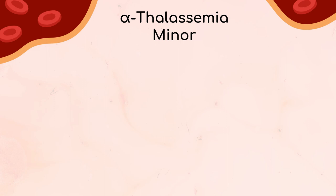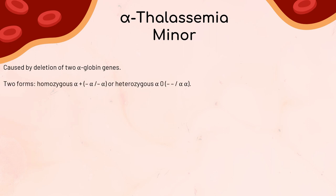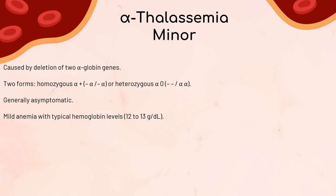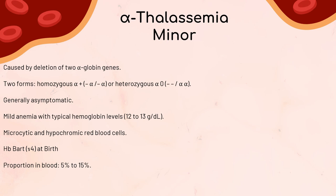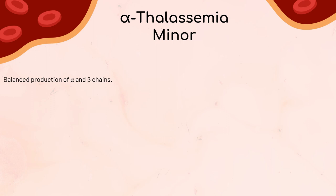Alpha-thalassemia minor is primarily caused by the deletion of two alpha-globin genes, existing in two forms: homozygous alpha-plus (-alpha / -alpha) or heterozygous alpha-0 (-- / alpha-alpha). It's generally asymptomatic. Individuals may experience mild anemia with hemoglobin levels ranging from 12 to 13 g/dL. Their red blood cells are microcytic and hypochromic. At birth, hemoglobin BART (gamma-4) is usually around 5% to 15%. In adults with alpha-thalassemia minor, alpha and beta chain production is balanced, so hemoglobin H (beta-4) is typically not present.